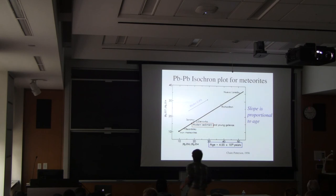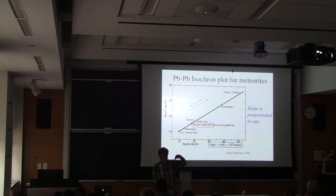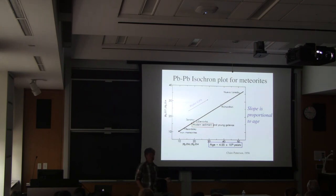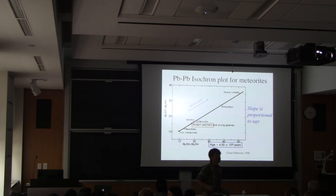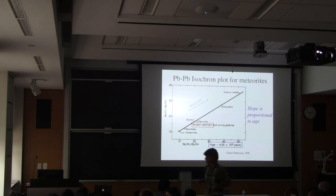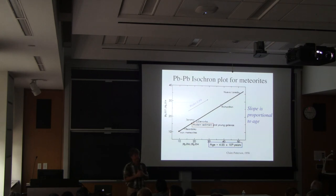We know that our solar system formed from material that had once been in earlier generations of stars. How do we know that? It's got heavier elements — it's got lead and uranium. Lead and uranium come from the inside of stars that went through a supernova phase, or maybe some other mechanisms involving neutron star collisions. The universe had been through quite a lot by the time our solar system formed. That's one of the things we can get from the chemistry of the solar system.